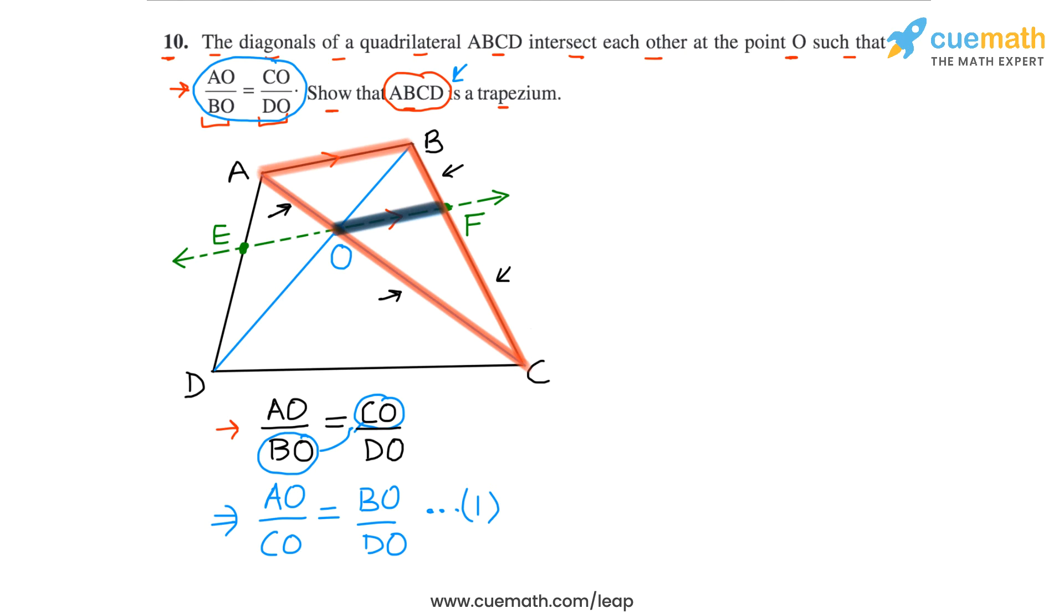Then we will consider the triangle BDC. In this triangle we are not sure that OF is parallel to DC or not, but we will make use of the fact that from the previous triangle we showed that AO by CO is equal to BF by CF, but we also know that AO by CO is equal to BO by DO. So in this triangle we will get the result that BO by DO is equal to BF by CF, and from here we can apply the converse of BPT and say that OF must be parallel to DC.